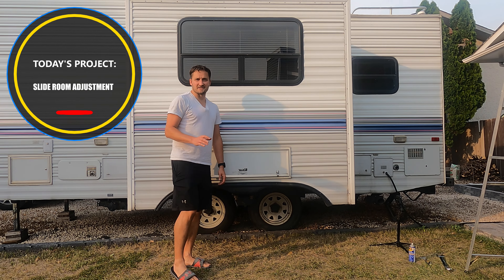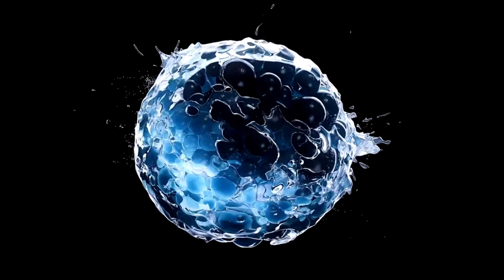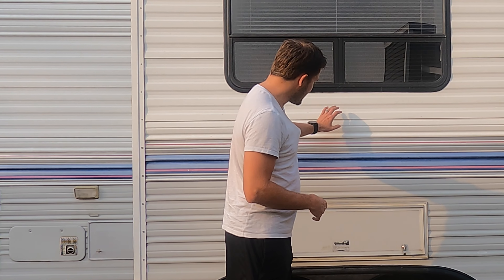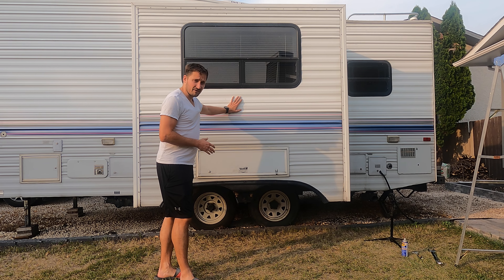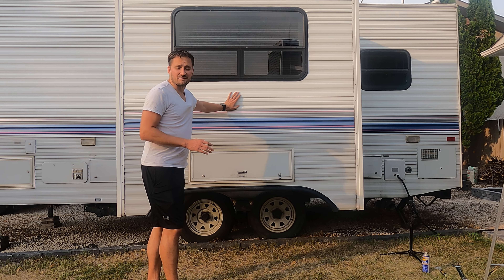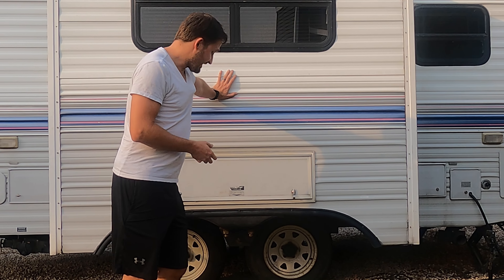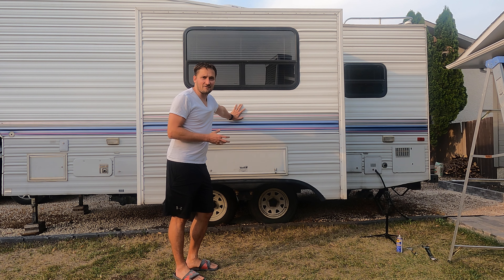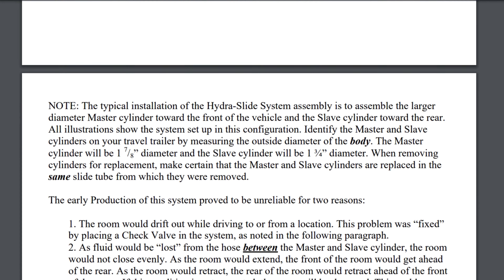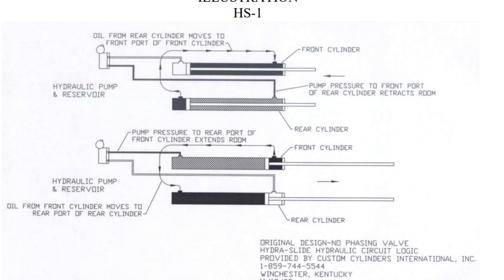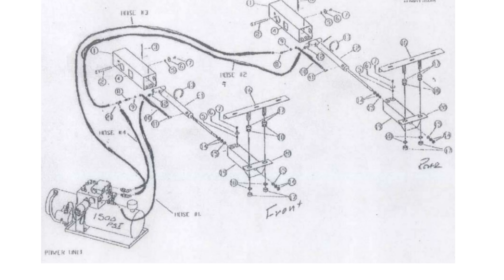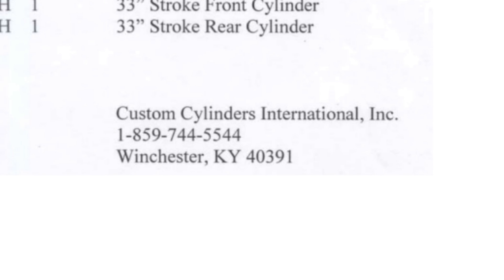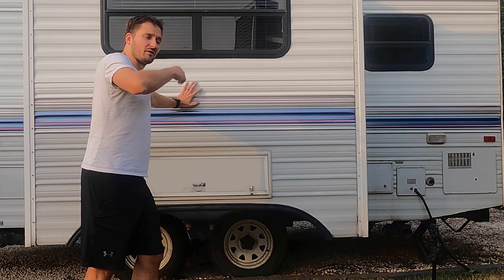Today what we're going to try to do is adjust the slide room on this camper. This is a '95 Terry Resort made by Fleetwood. The problem is trying to make adjustments on the slide room — it's next to impossible to find any actual documentation. I have scoured the internet and found next to nothing. This is a hydra slide room and I was able to find the company that actually manufactured these for Fleetwood, and I found some diagrams on their site, but the diagrams were more for parts or troubleshooting, not how to actually adjust the room. Fleetwood's been bankrupt for about 15 years, but I was able to get enough information from that document to piece together how to do this.